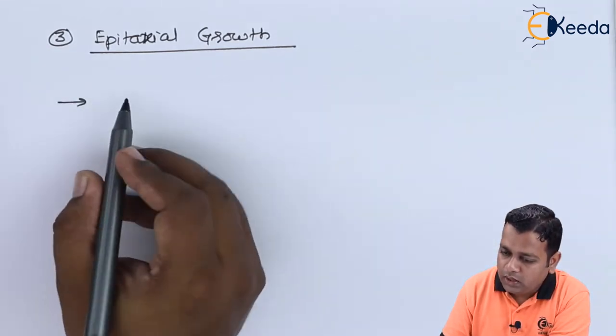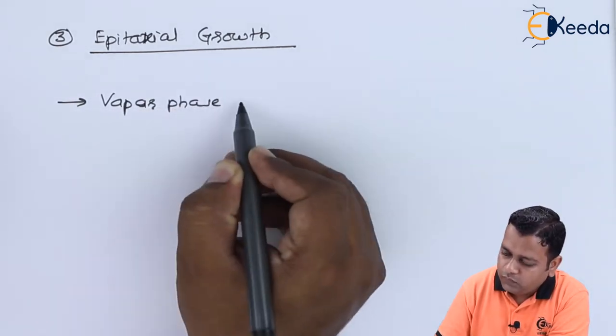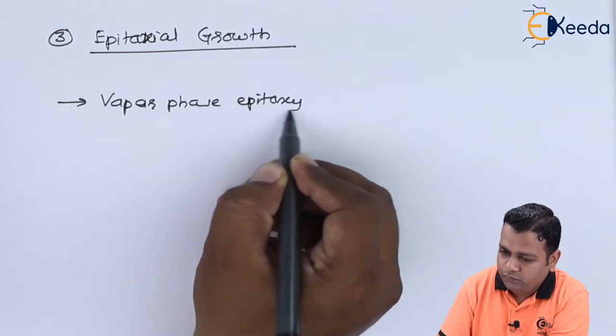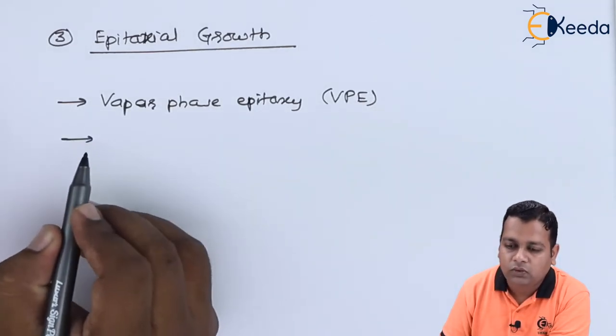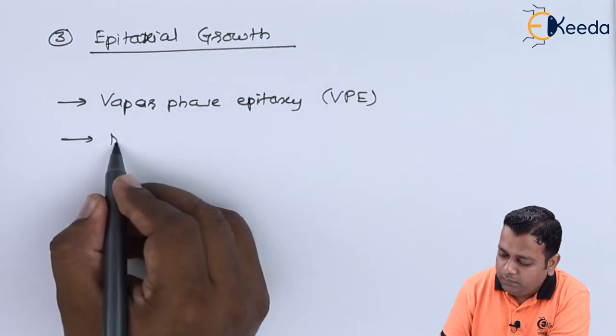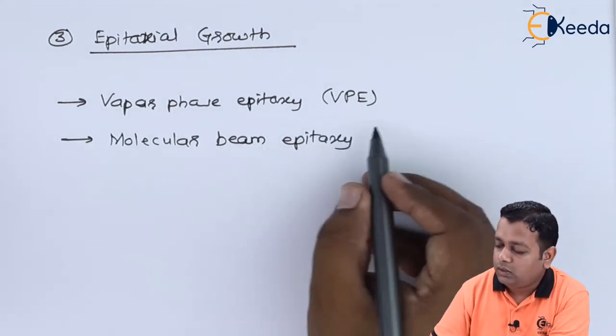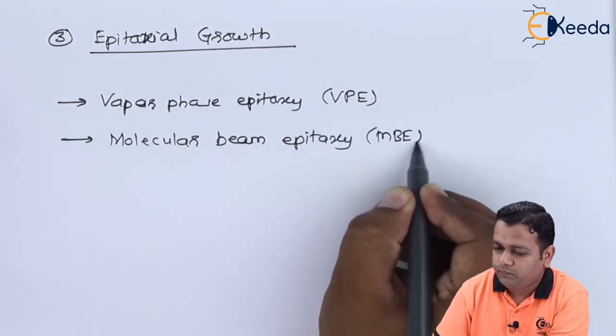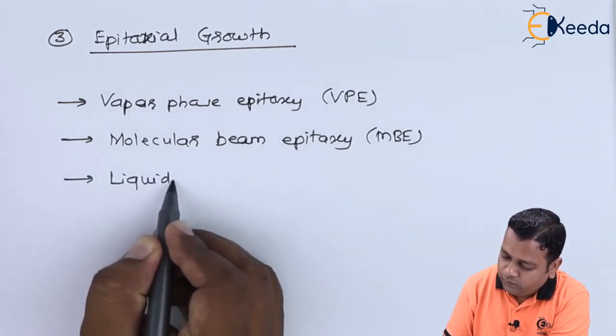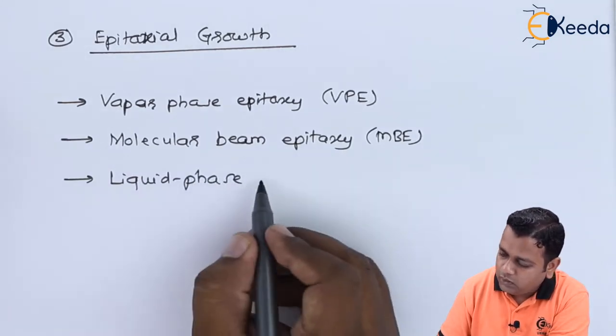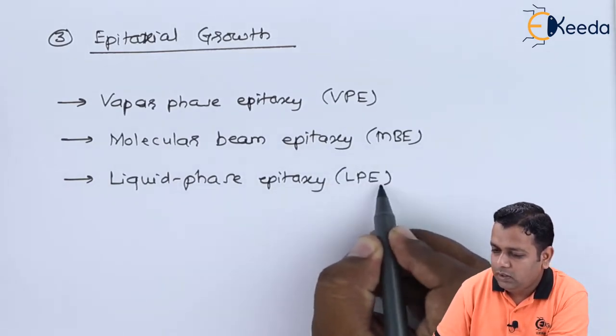The three types of the epitaxy can be listed as very first of all vapor phase epitaxy, which can be abbreviated as VPE. Whereas the second one we can go for molecular beam epitaxy, abbreviated as MBE. And the third one is given as liquid phase epitaxy, abbreviated as LPE.